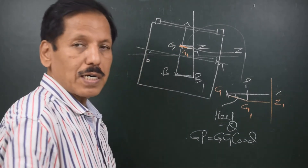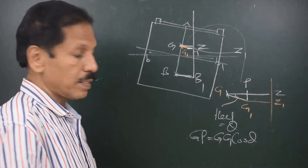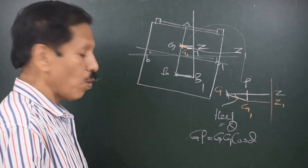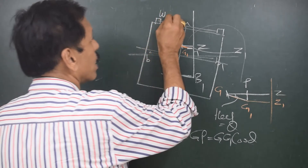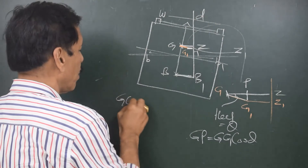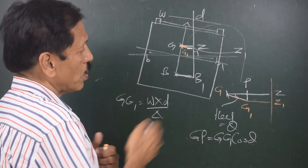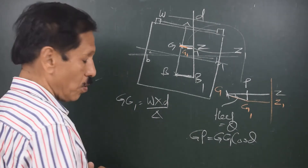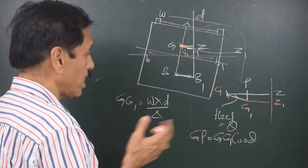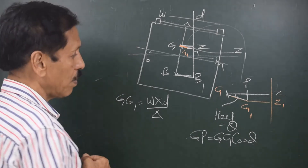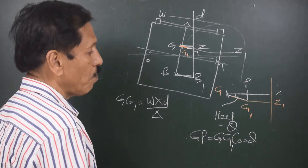To draw a new GZ curve, at every angle of heel we subtract GG1 cos theta to find the correct righting lever. How do you find GG1? Suppose this weight is W and this distance is D, then GG1 equals W times D divided by displacement. So the transverse shift of G, or GG1, is given by W times D upon displacement. This GG1 multiplied by cos theta at different angles gives the new righting lever as GZ minus GG1 cos theta.